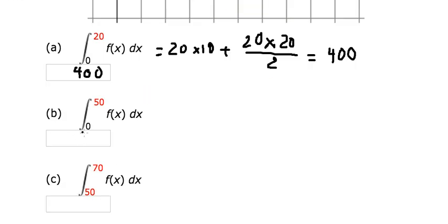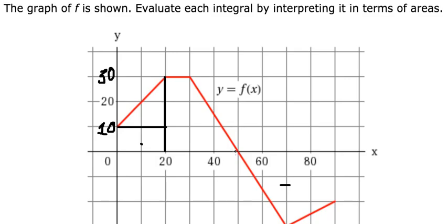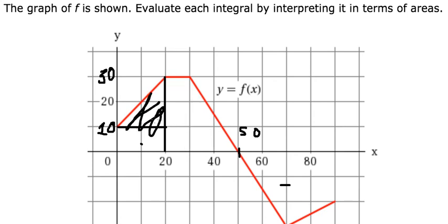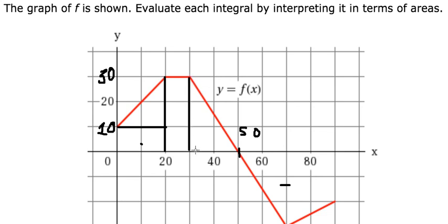Now for question B, we want to find the integration from zero to number 50. We need to find the area of this region plus the area of this other region. So we can find the integration from zero to number 50. We need to divide this into two figures — a rectangle and a triangle.